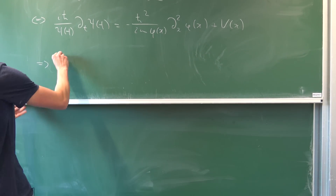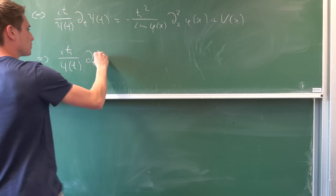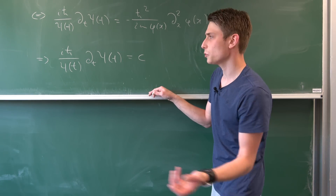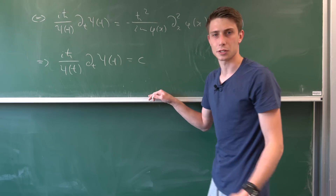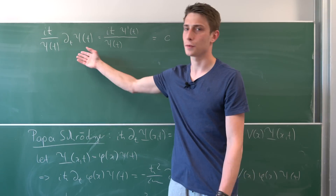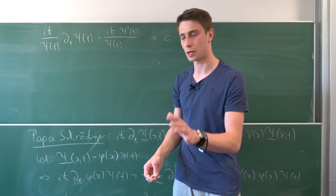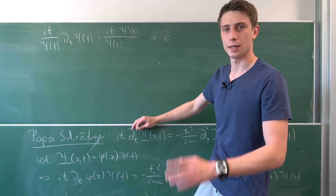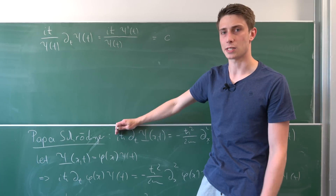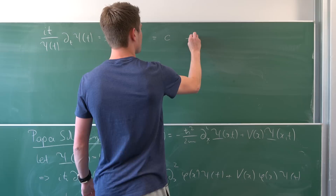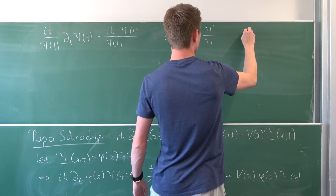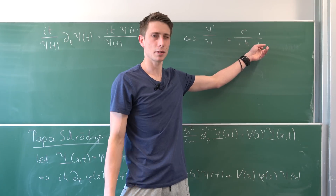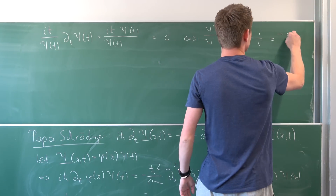Looking at the left hand side: i h-bar over psi of t times the partial derivative of psi of t with respect to t equals some constant c. We can actually solve that. Rewriting in Newton prime notation, we divide both sides by i times h-bar (since it's not zero), giving us psi prime over psi equals c over (i times h-bar). Multiplying numerator and denominator by i, since i times i equals minus one, we get minus c times i over h-bar.